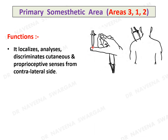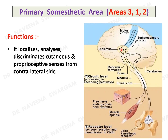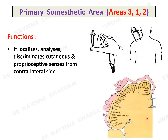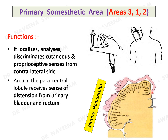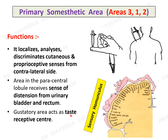Functions: the primary somesthetic area localizes, analyzes, and discriminates cutaneous and proprioceptive senses from the contralateral side of the body. Area 3 is concerned with cutaneous senses like touch, pressure, position, and vibration. Area 1 is concerned with cutaneous and joint sensations. Area 2 is concerned with proprioception from muscles and joints. Similar to the primary motor area, it also shows somatotopical representation. The area on the paracentral lobule receives sense of distension from the urinary bladder and rectum, and the lower part (gustatory area) acts as the taste receptive center.